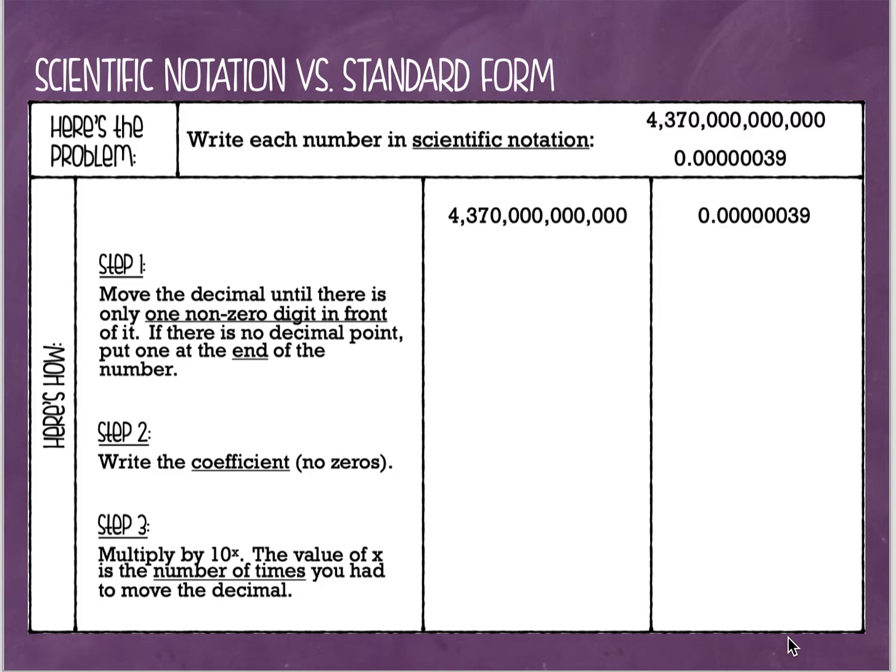Here's the problem. We are going to write each number in scientific notation. So if you notice, we have a very large number and we have a very small number. This is the whole purpose of scientific notation. It's a way to write really large numbers or really small numbers in a more convenient way. We're going to get rid of all those zeros and we're just going to make it simpler and write them in a way in which the numbers are easier to work with.